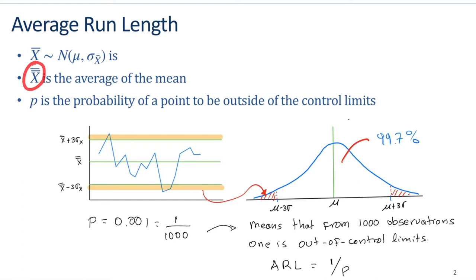The mean of the sample is distributed as a normal with mean mu and standard deviation sigma of x-bar. X double-bar is the average of all the means. Now let's say that p is the probability of a point to be outside of the control limits. The upper control limit is defined by x-bar plus three sigma-x, and the lower limit is defined by x double-bar minus three sigma-x.